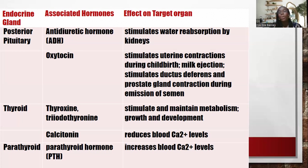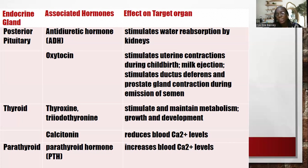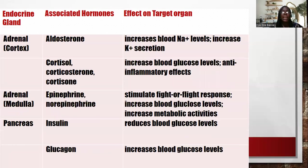The thyroid gland produces thyroxine (T4), triiodothyronine (T3), and calcitonin. T3 and T4 are responsible for stimulating and maintaining metabolism, as well as growth and development. Calcitonin reduces blood calcium levels. Associated with the thyroid, the parathyroid hormone has the opposite effect — it increases blood calcium levels.